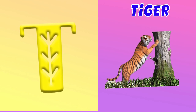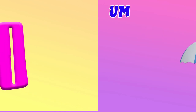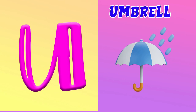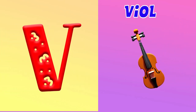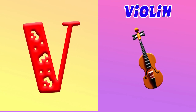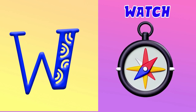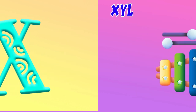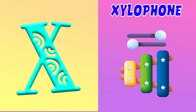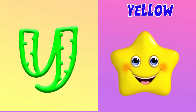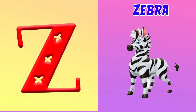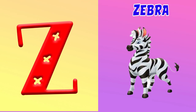T for Tiger. U for Umbrella. V for Violin. W for White. X for Xylophone. Y for Yellow. Z for Zebra.